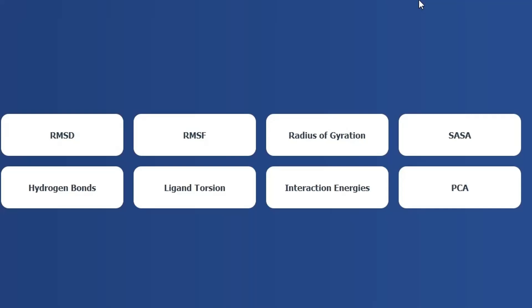Please note that Gromancer is under active development, and very soon we will add more functionalities to this tool. Now, you should know that MD simulation analysis normally results in the production of XBG files. We normally use XBG files in XMgrace or Excel to plot the MD simulation data. Gromancer supports XBG files.